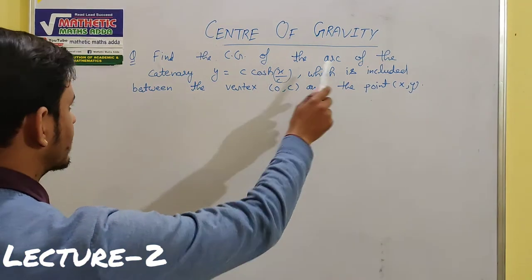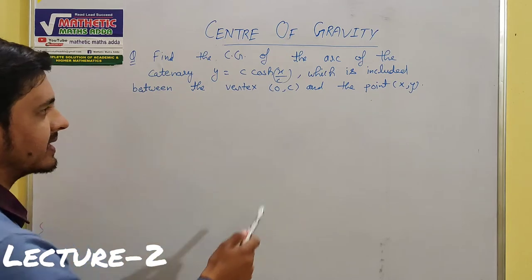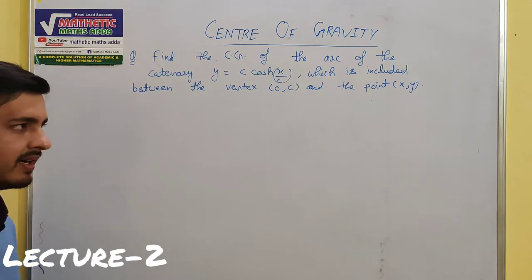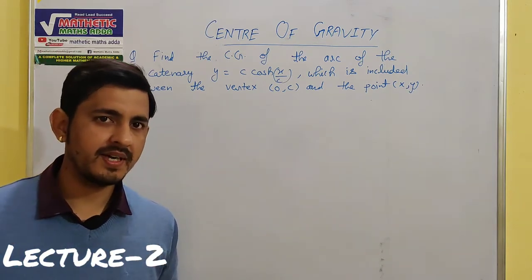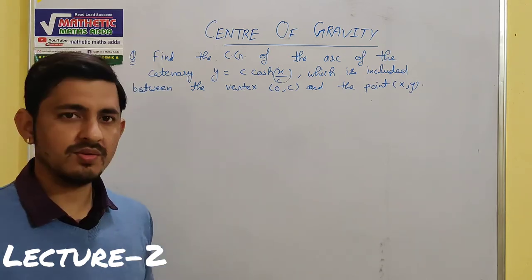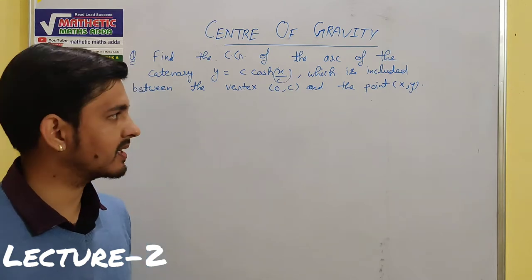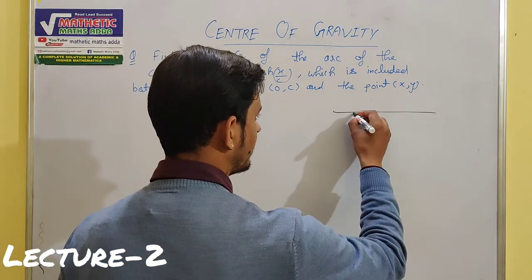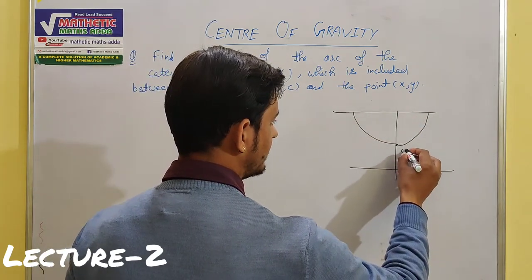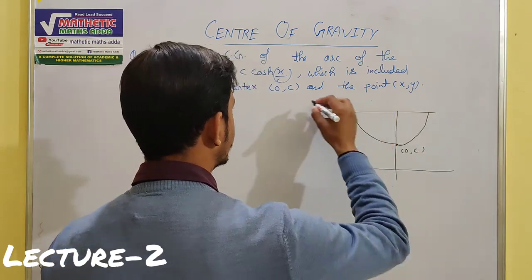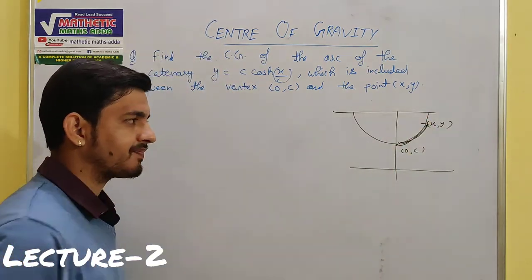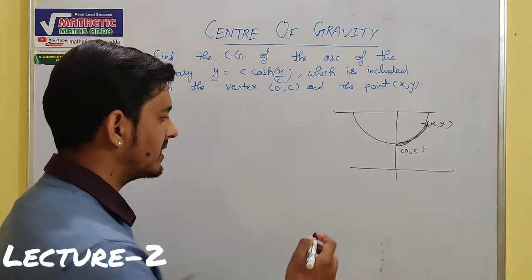We find the center of gravity of the arc of the catenary y = c·cosh(x/c), between the vertex (0, c) and the point (x, y). Students, I have made several videos on common catenary — if you want to understand any concept related to common catenary, you can watch those older videos in the playlist. A common catenary is basically a uniform chain with its two ends fixed. The point is (0, c), and we have to find the center of gravity of the arc from this point to a particular point (x, y).